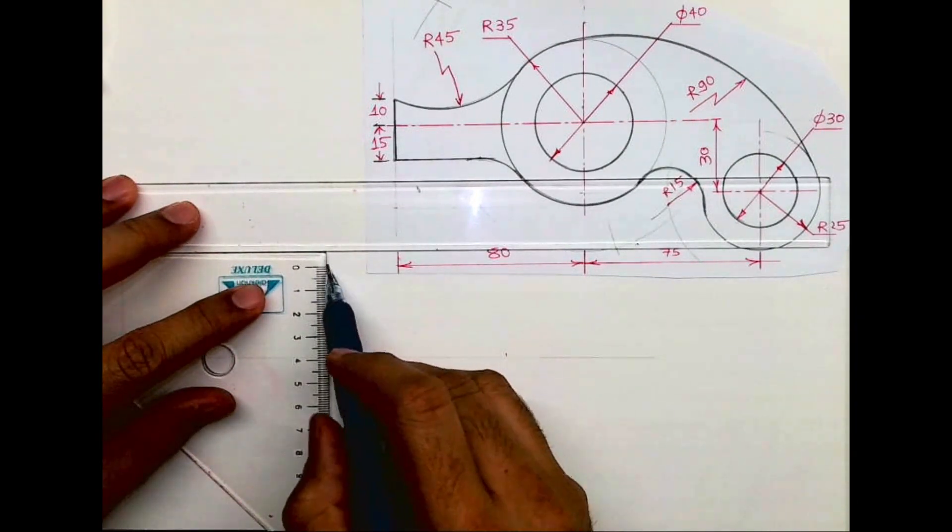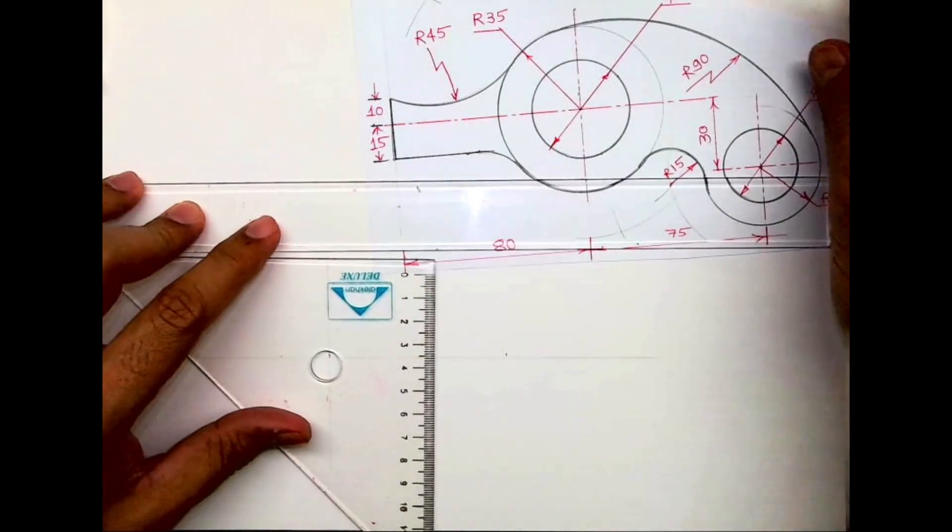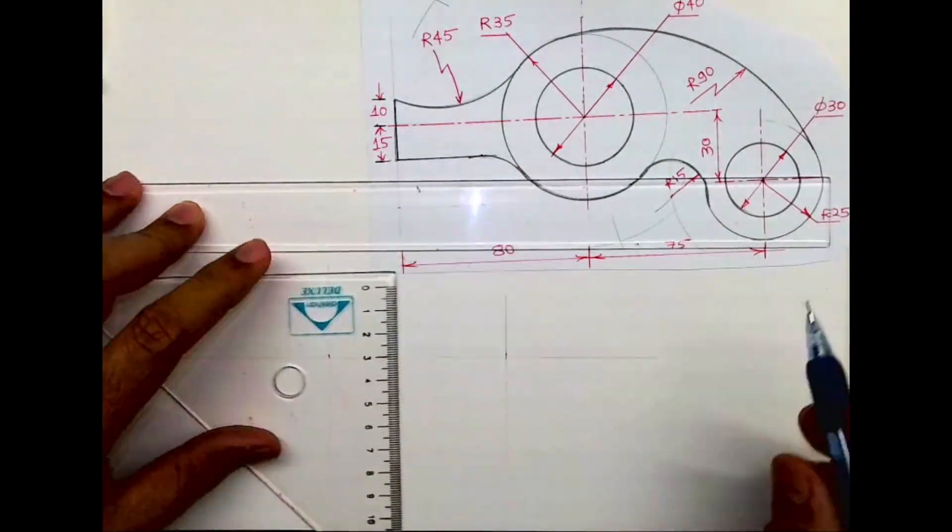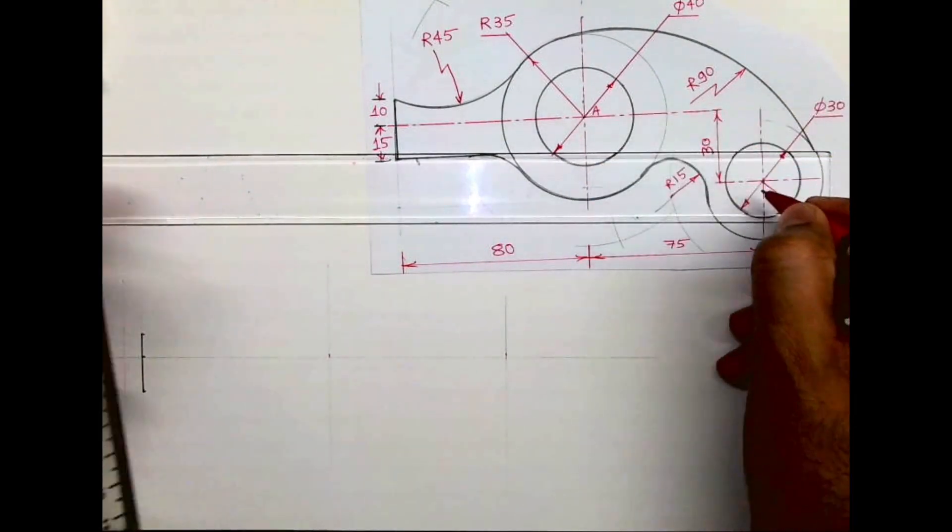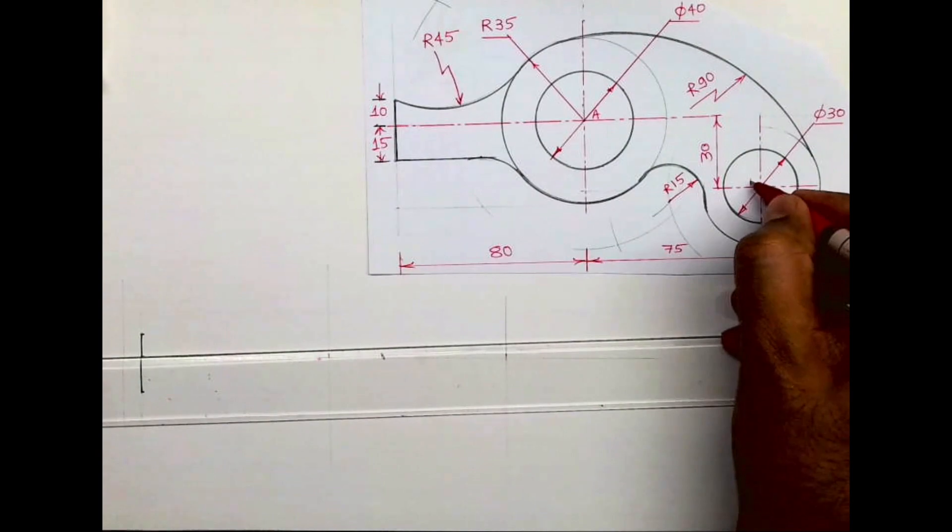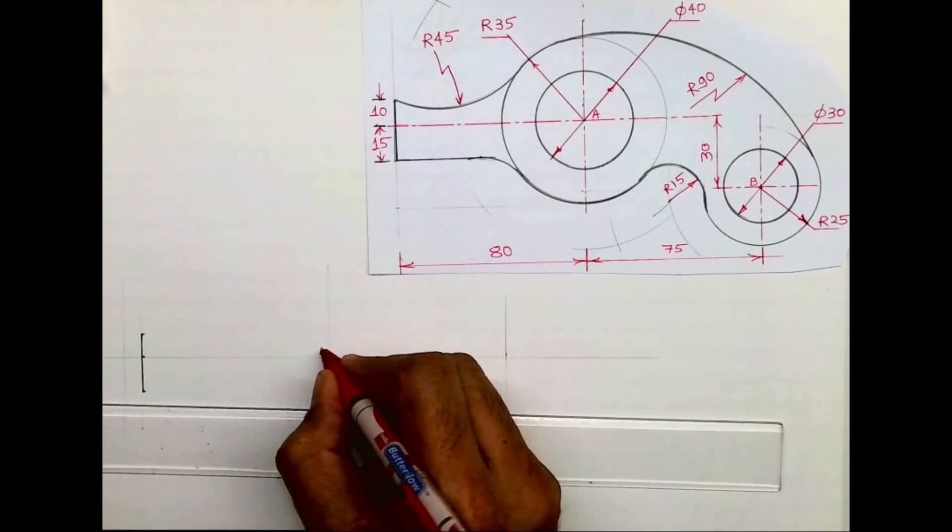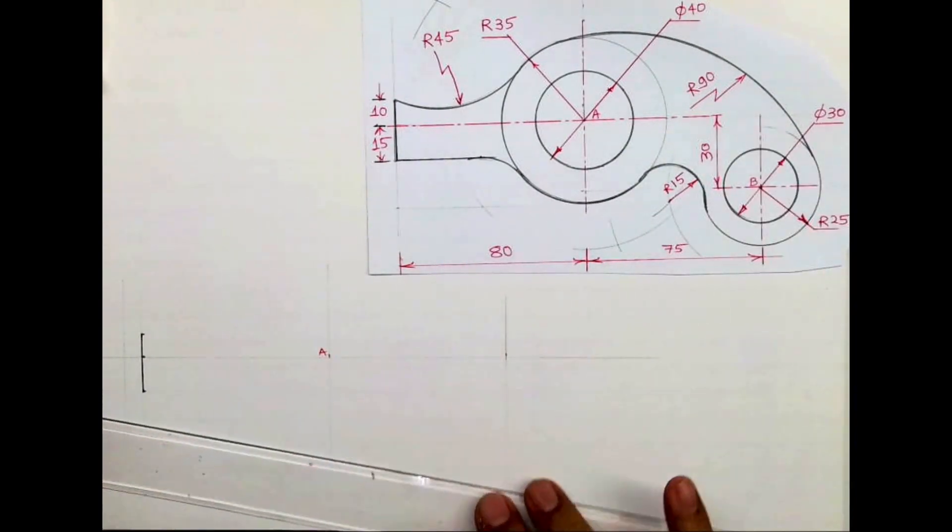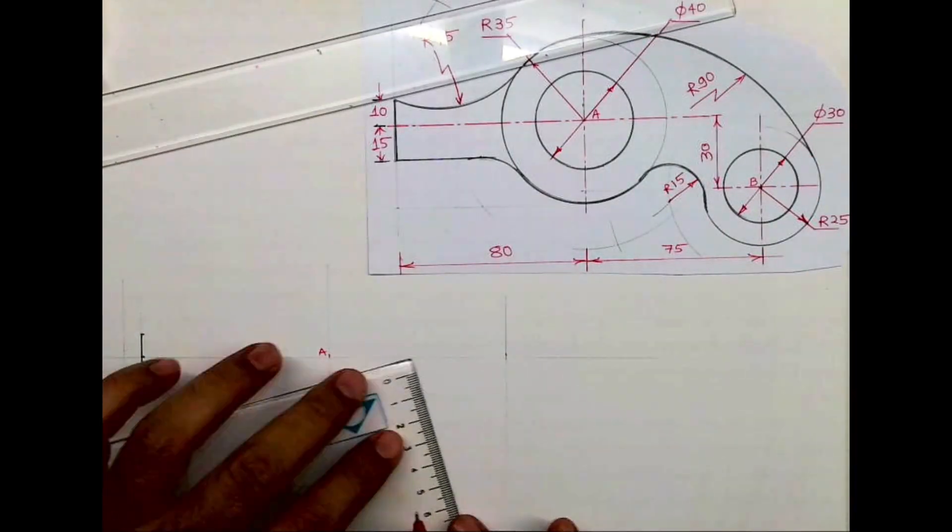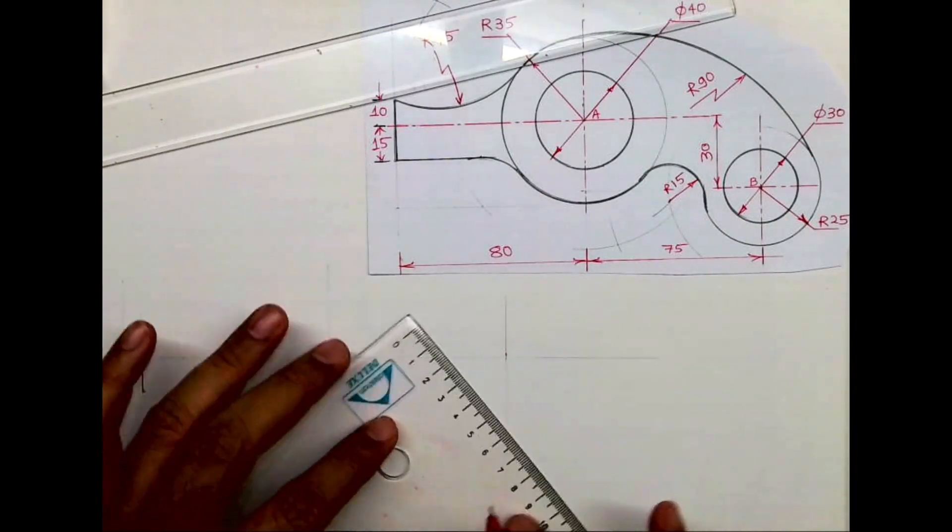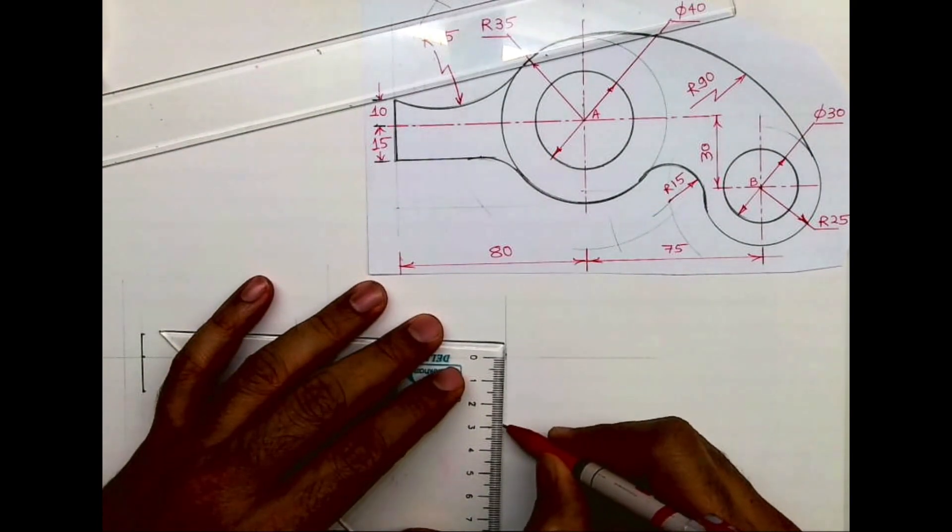Now draw a vertical line. From here I will mark point A and point B. A is here, but B is 30 down. So you take 75 and go down by 30 to mark point B.